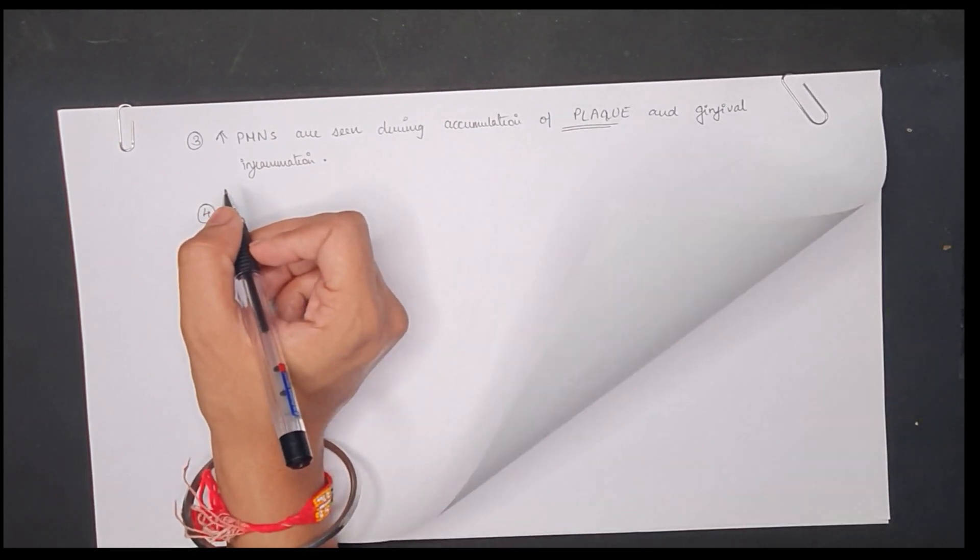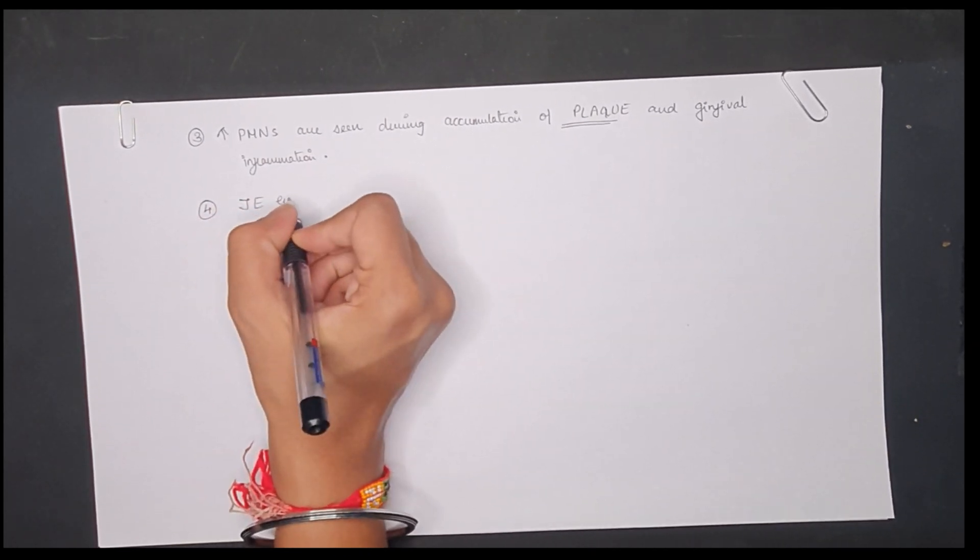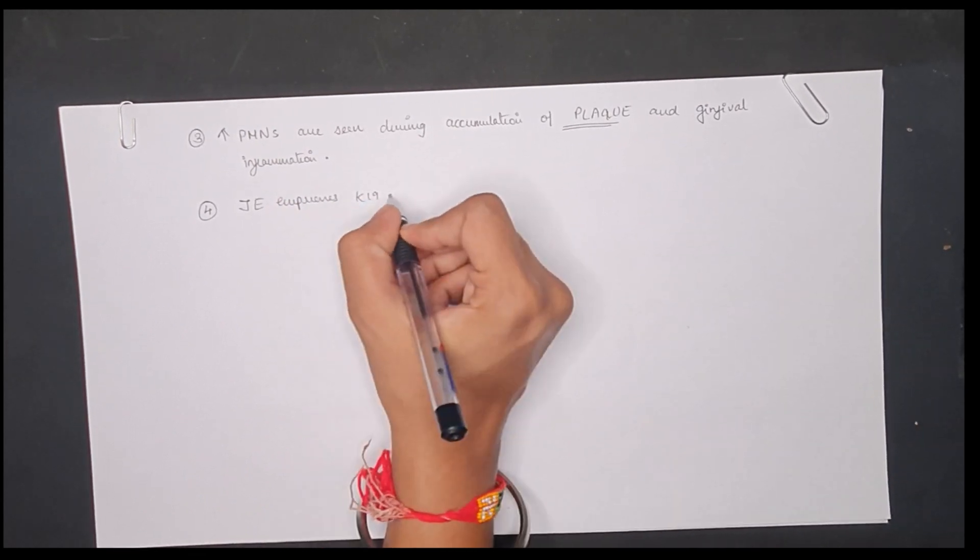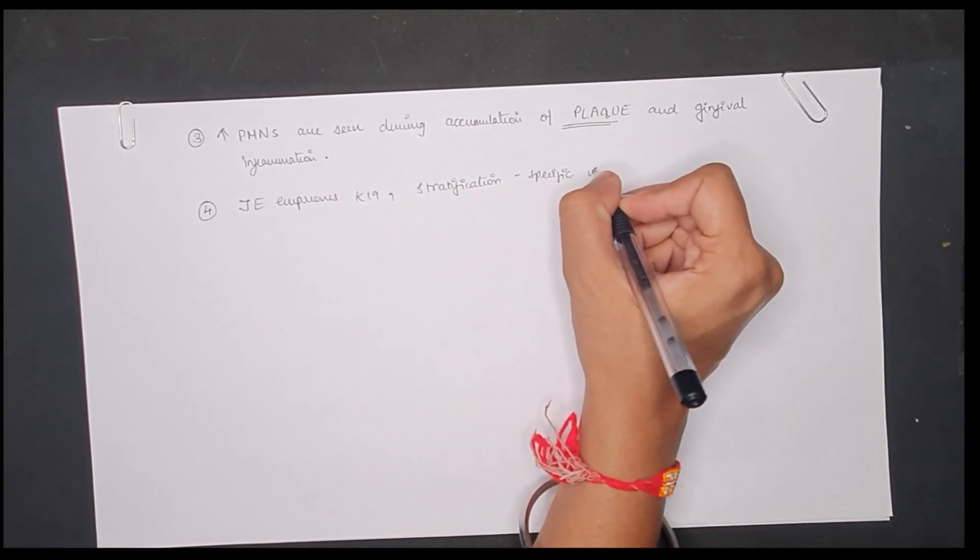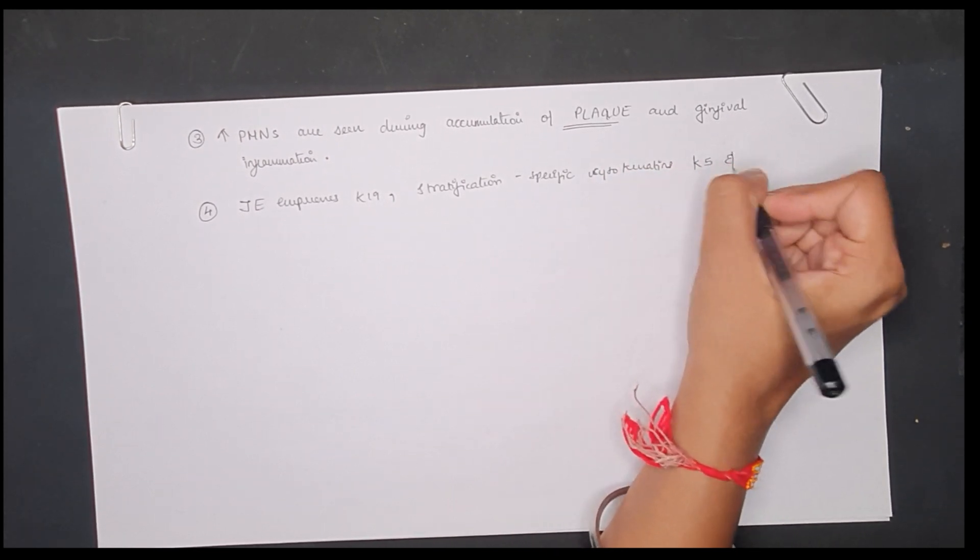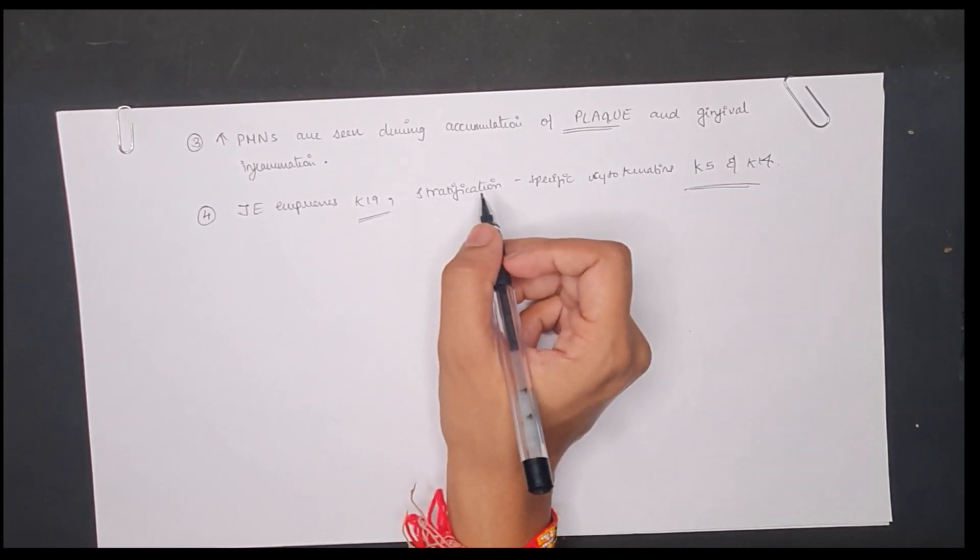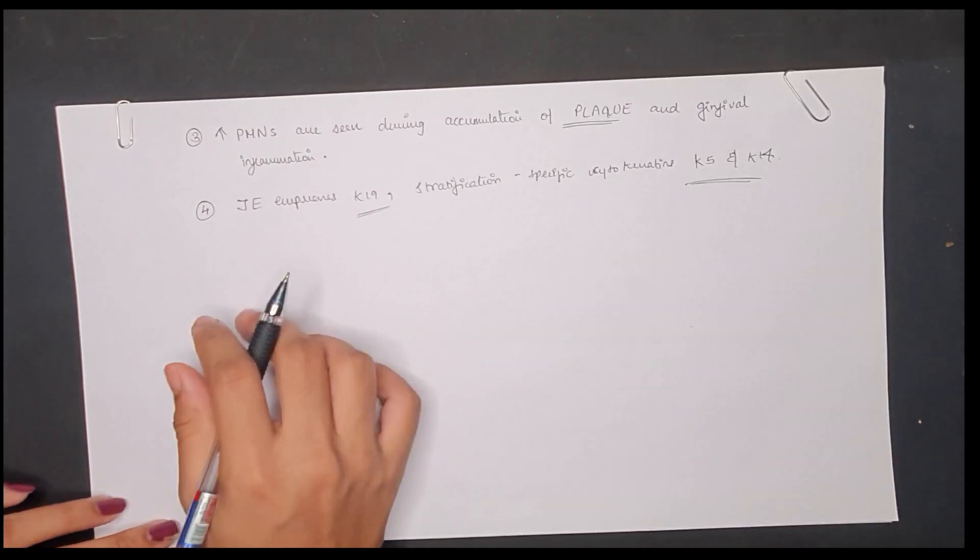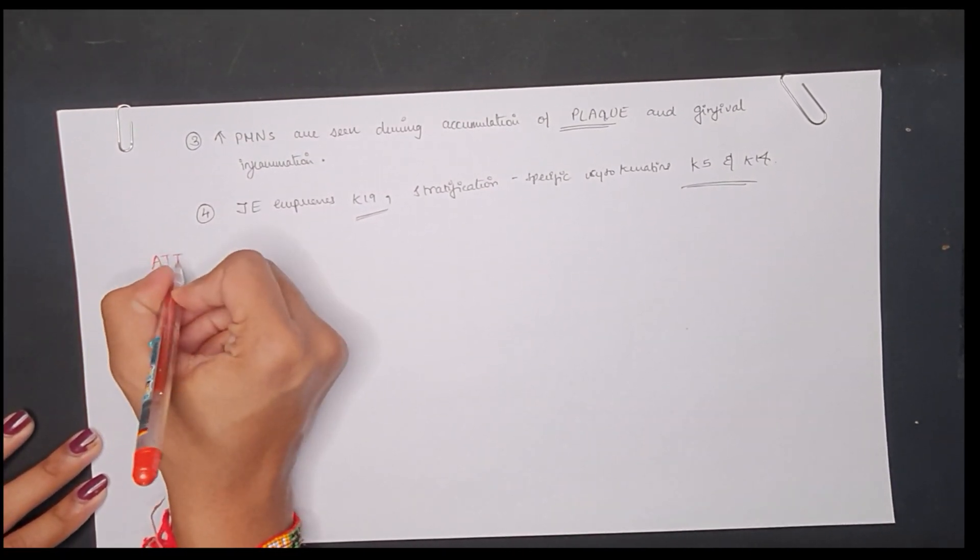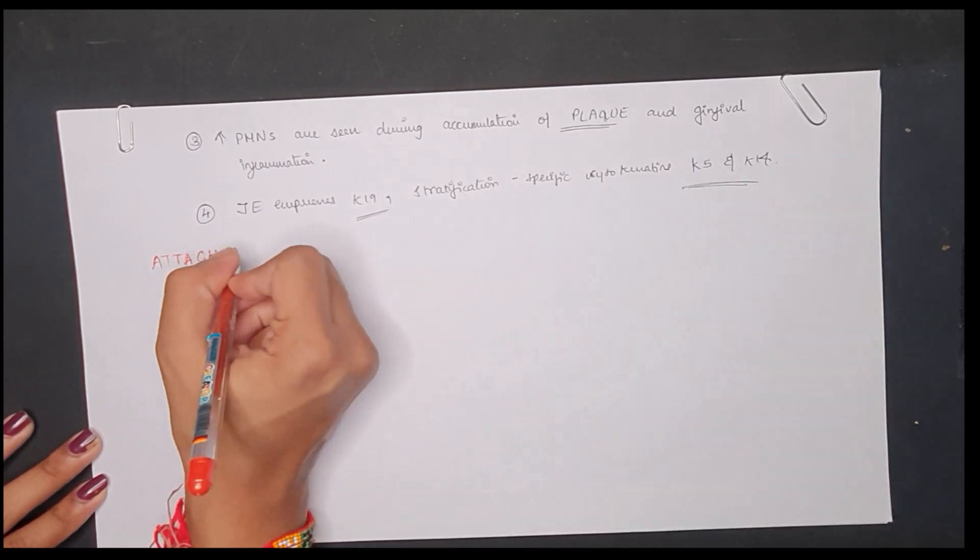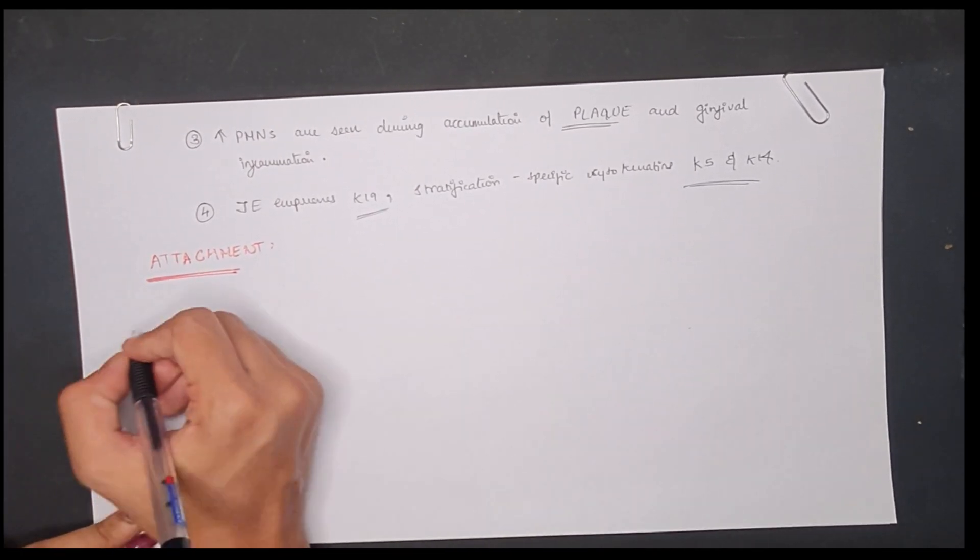Other than that, the different keratin polymorphs of junctional epithelium have a particular histological pattern which expresses K19, which is absent in the keratinized epithelium, and the stratification-specific cytokeratins K5 and K14. But these do not express K4 and K13, also K16.